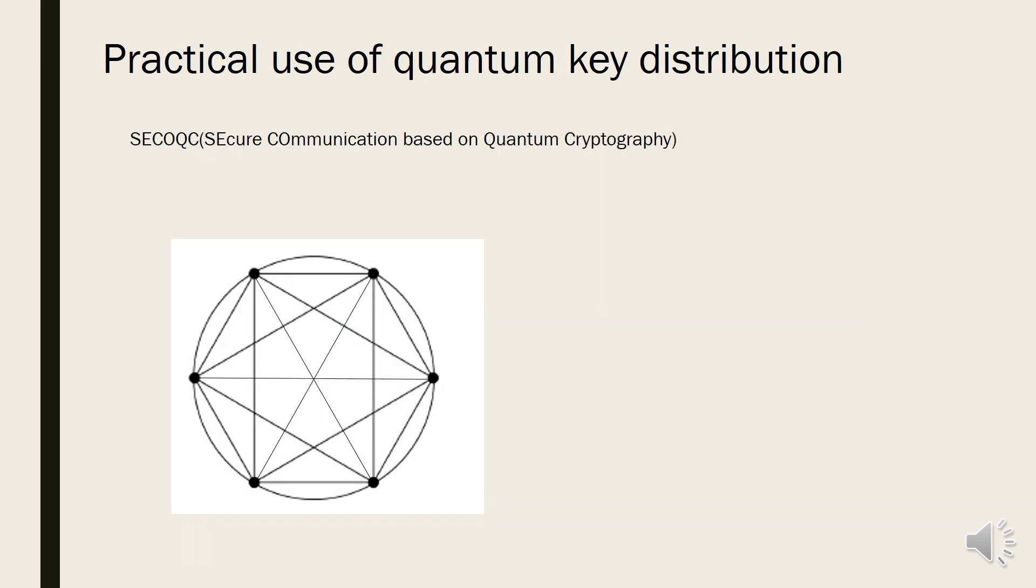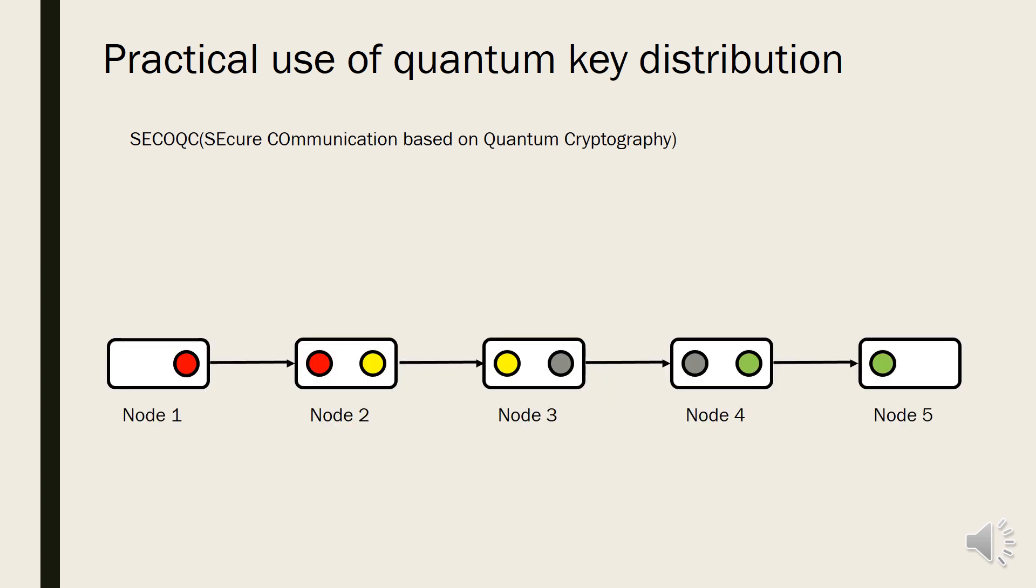This is the final part of this video, the practical use of quantum key distribution, SECOQC. This is a project that aims to develop quantum cryptography system by EU. Quantum cryptography demands one-to-one communication line because of unaffected copy. Therefore, if there are N organizations, they need to build N times N over 2 lines. For this reason, they use this method to simplify.